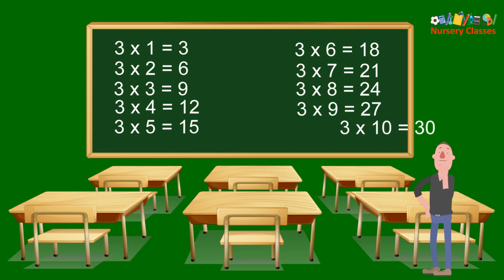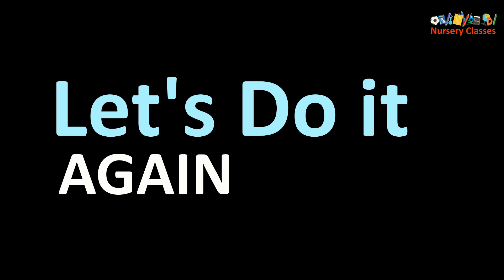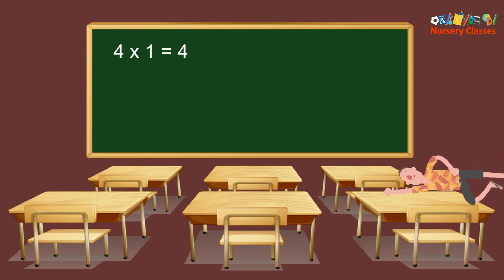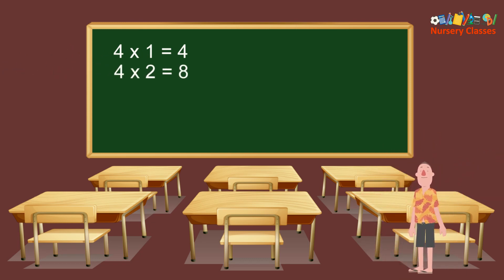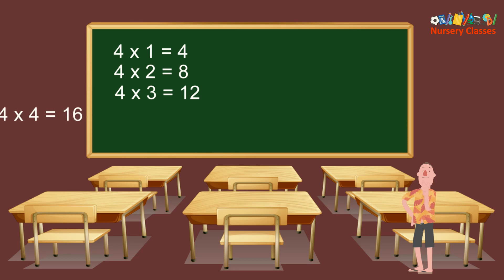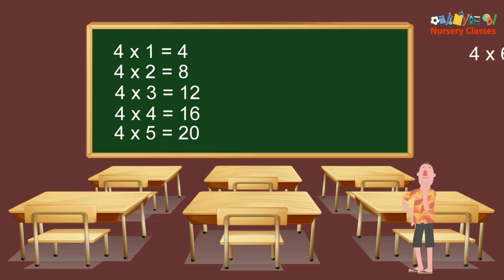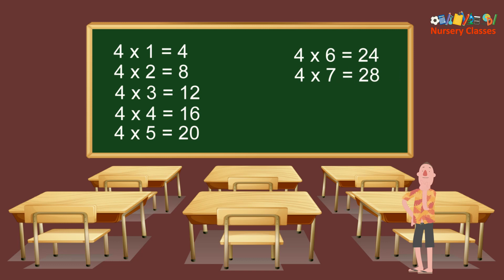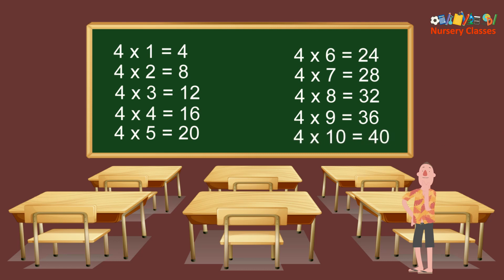3×10 equals 30. 4×1 equals 4, 4×2 equals 8, 4×3 equals 12, 4×4 equals 16, 4×5 equals 20, 4×6 equals 24, 4×7 equals 28, 4×8 equals 32, 4×9 equals 36, 4×10 equals 40.